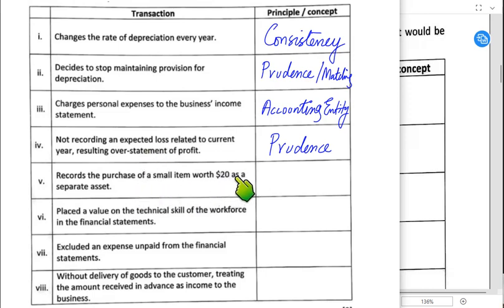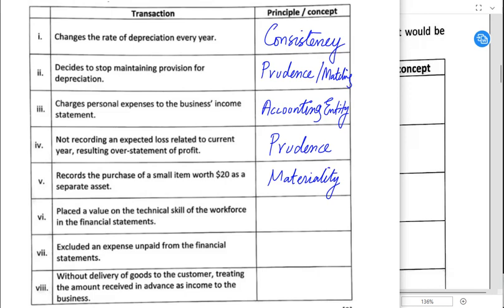Recording the purchase of a small item worth $20 as a separate asset — which concept is violated? It is the materiality concept. Materiality concept means we should not record small items as separate assets; instead, we should record them as an expense.